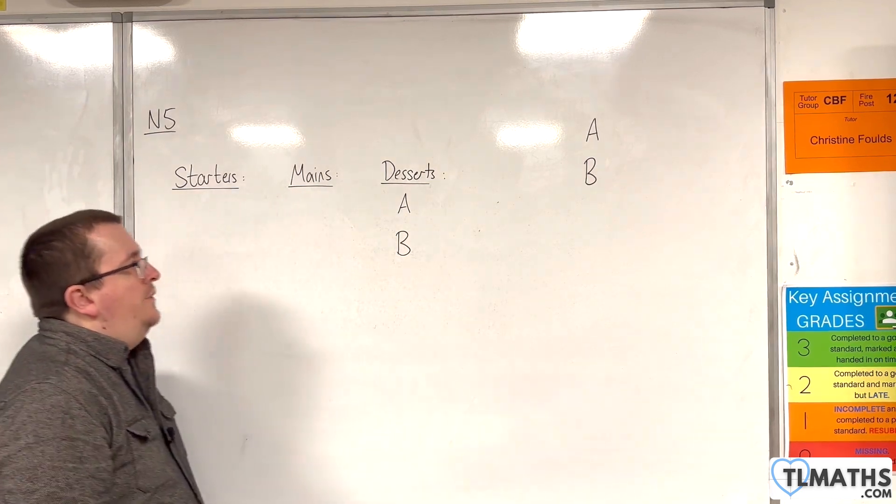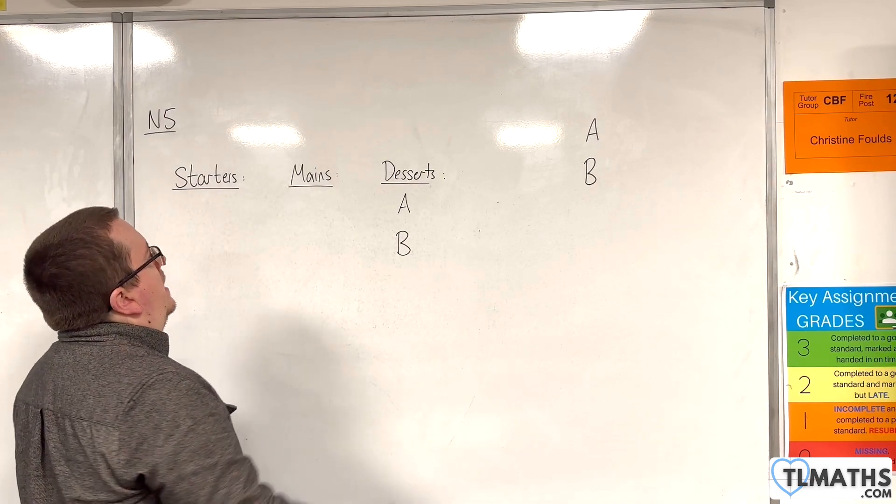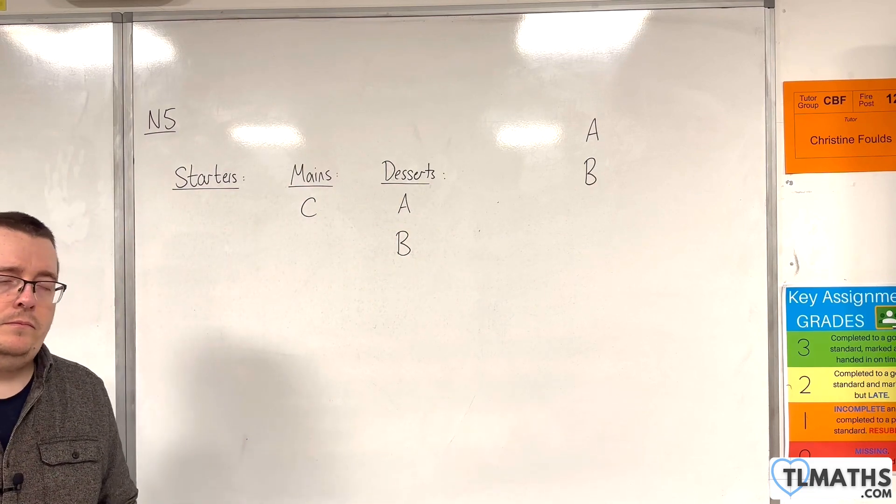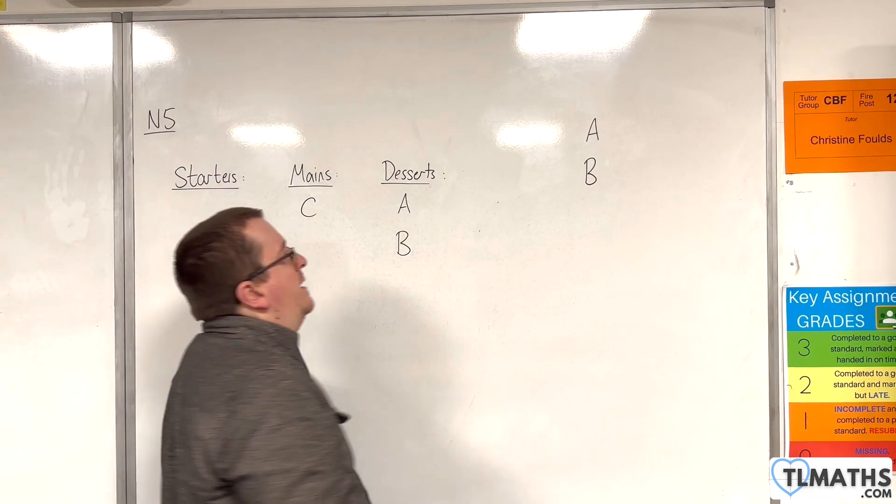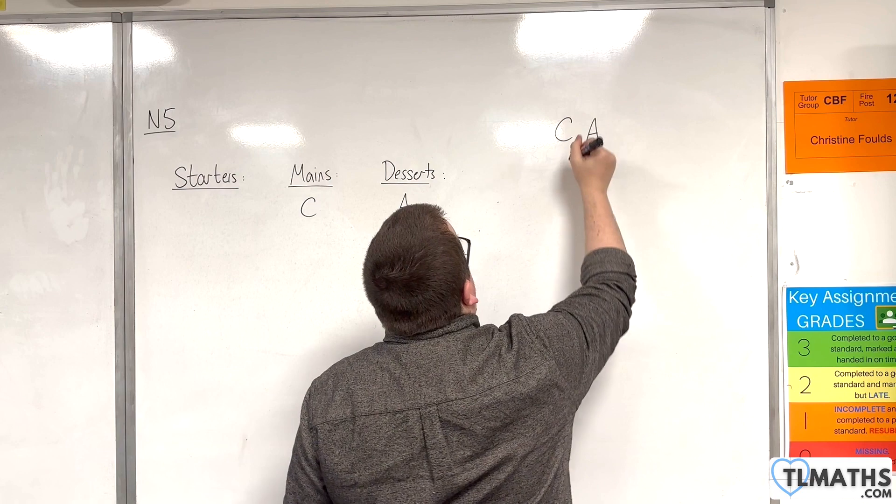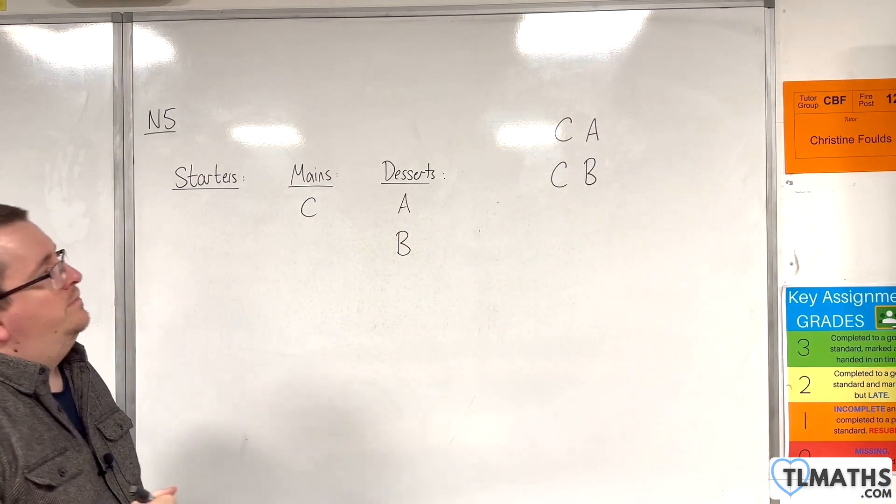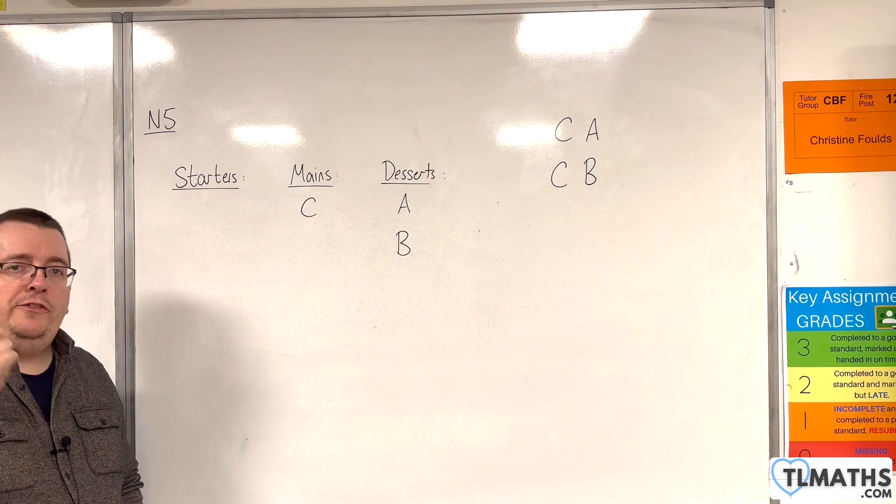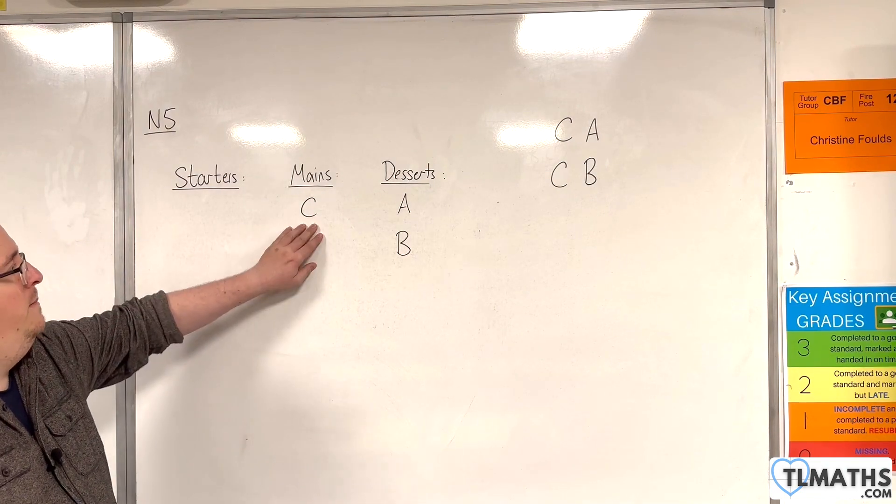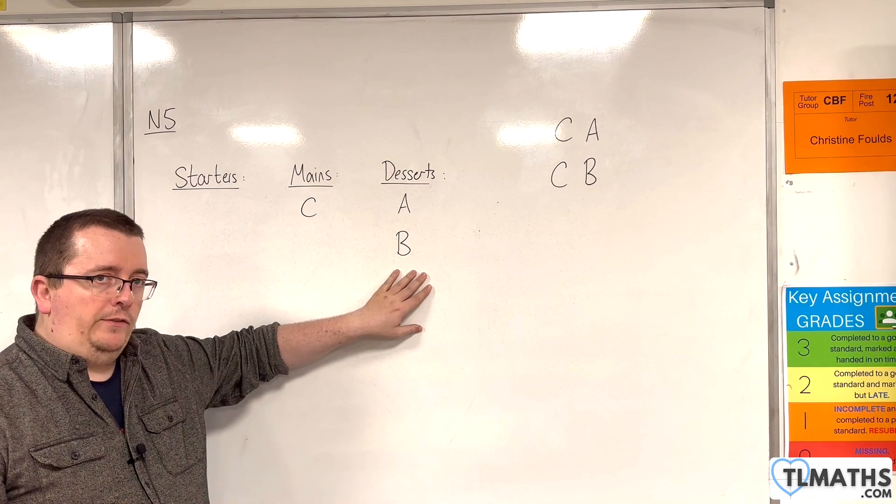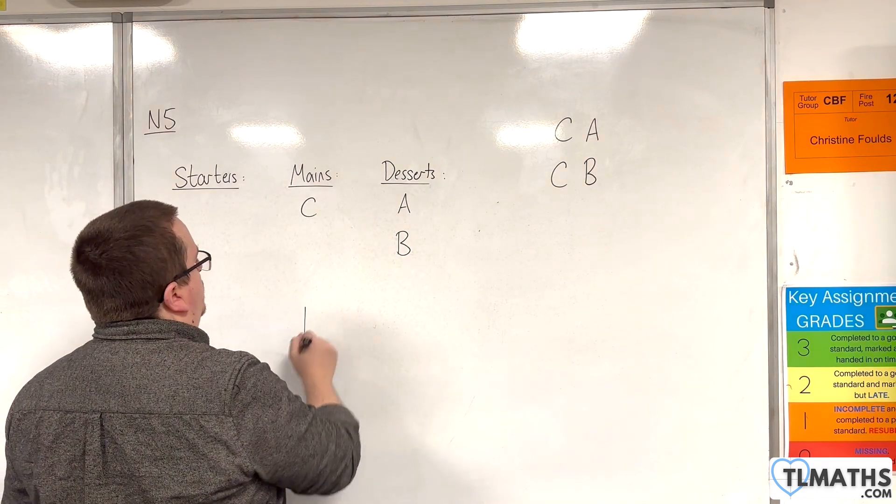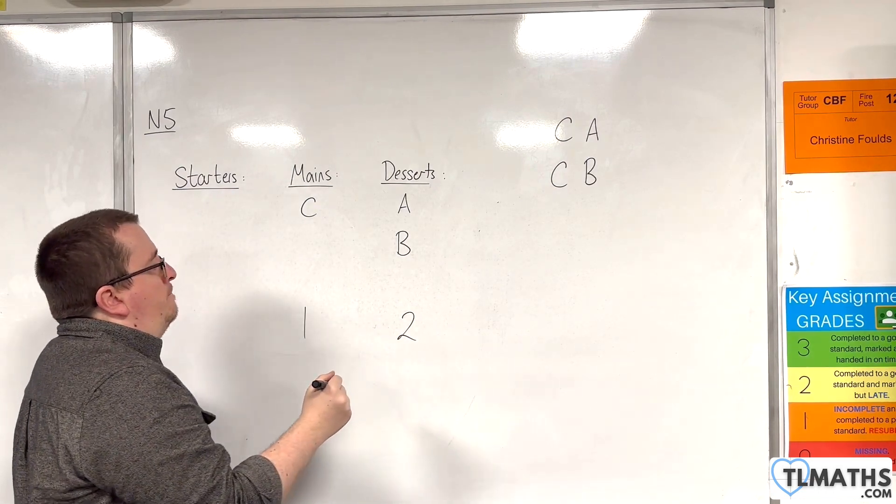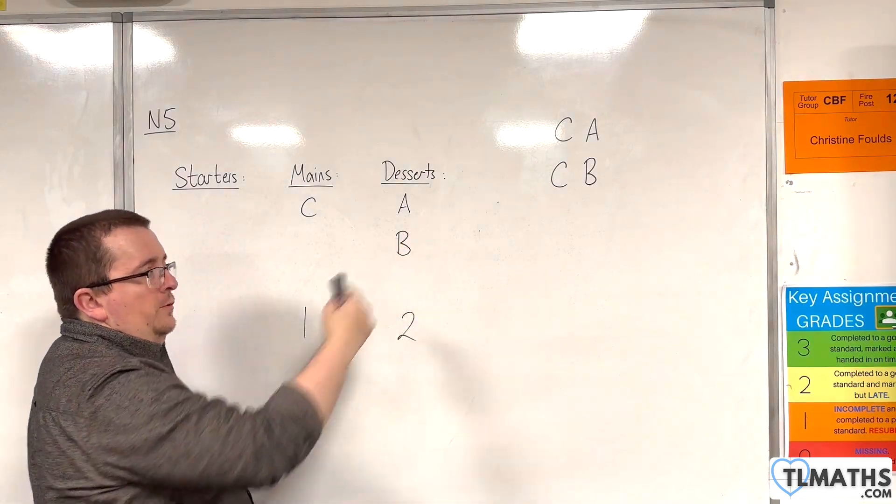So, let's say now we add in one main. We're going to call the main C. Now, the main here will go before both A and B. So we've still got just two options. We've got one main, two desserts. We've got one main to choose from, we've got two desserts to choose from. And one times two is two, of course.